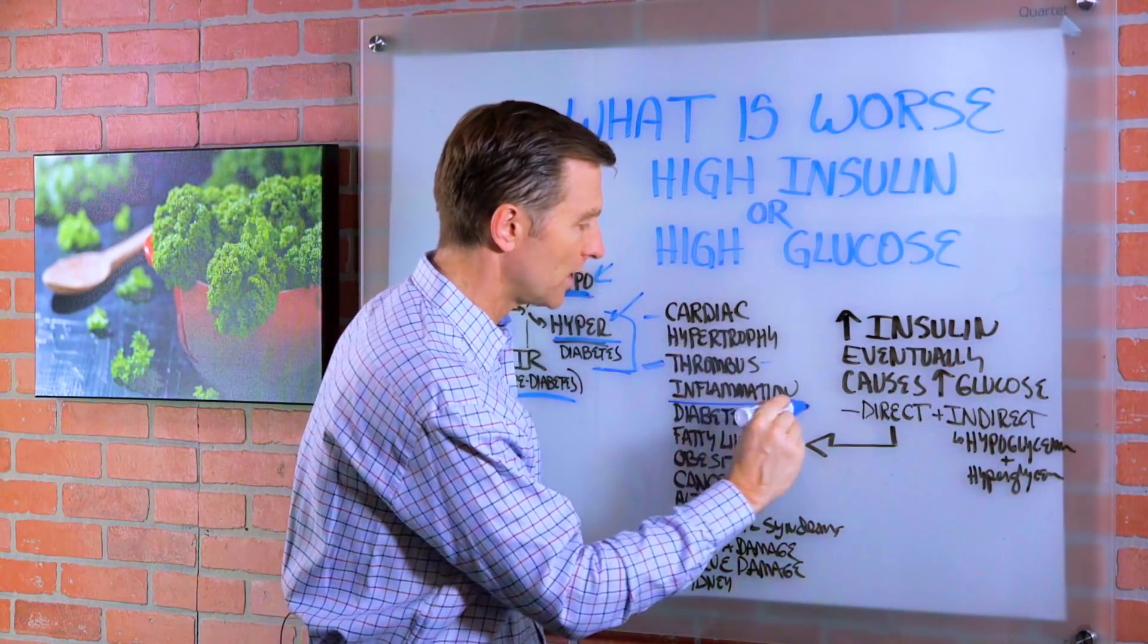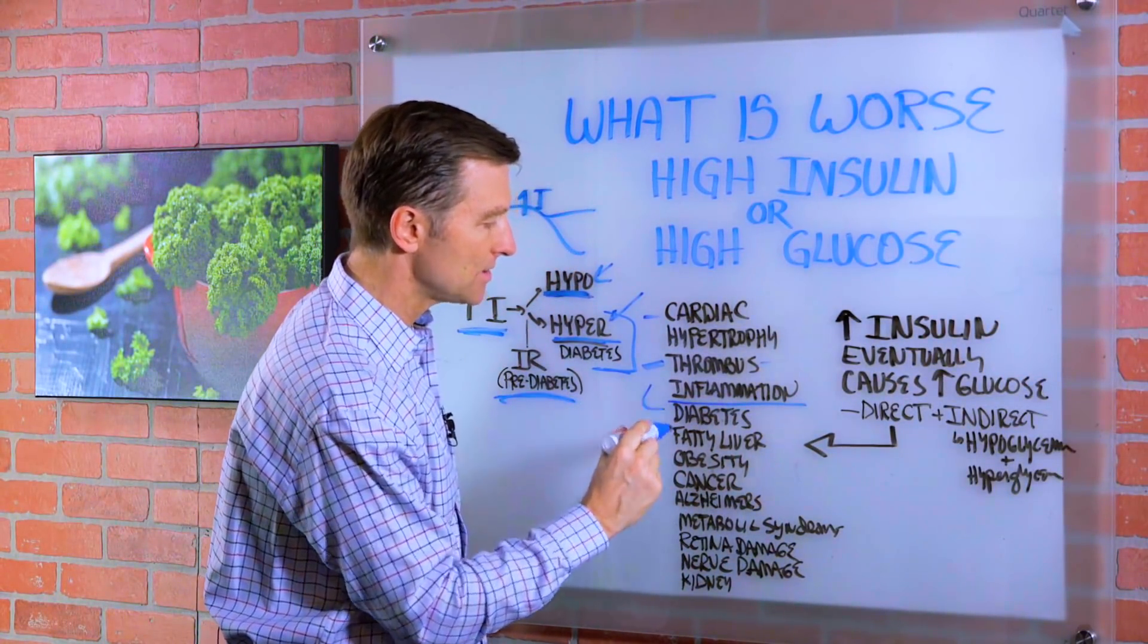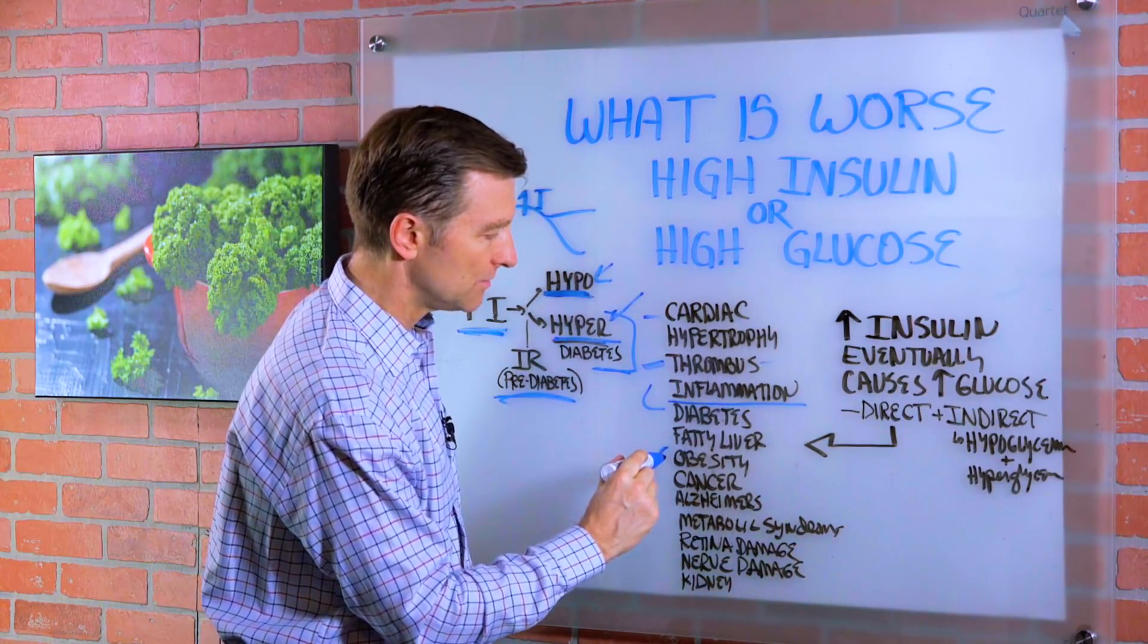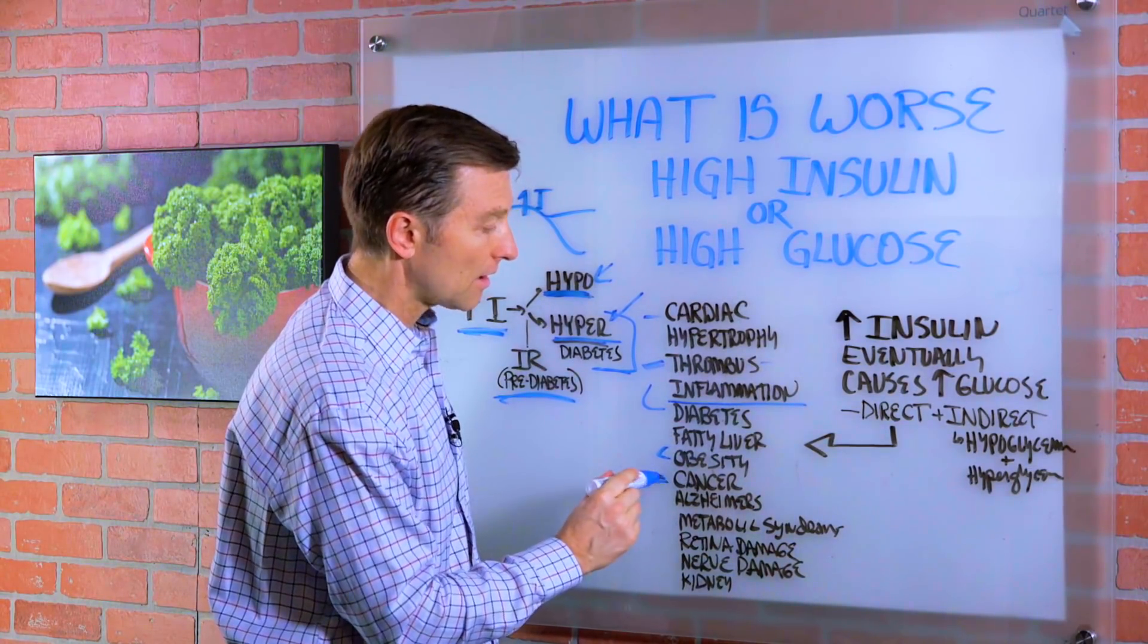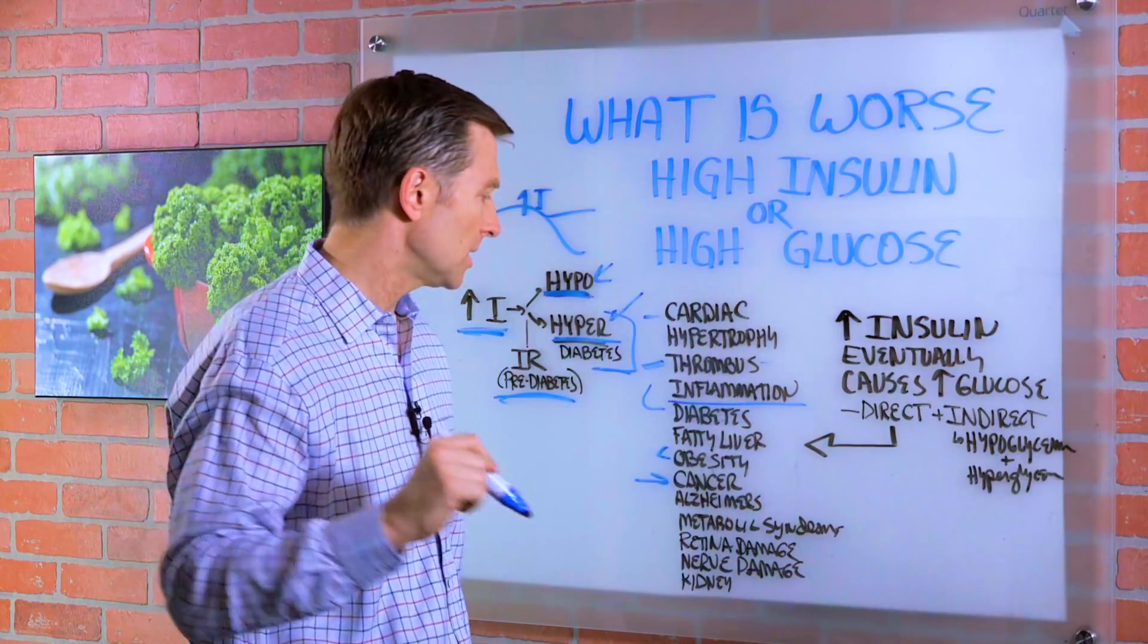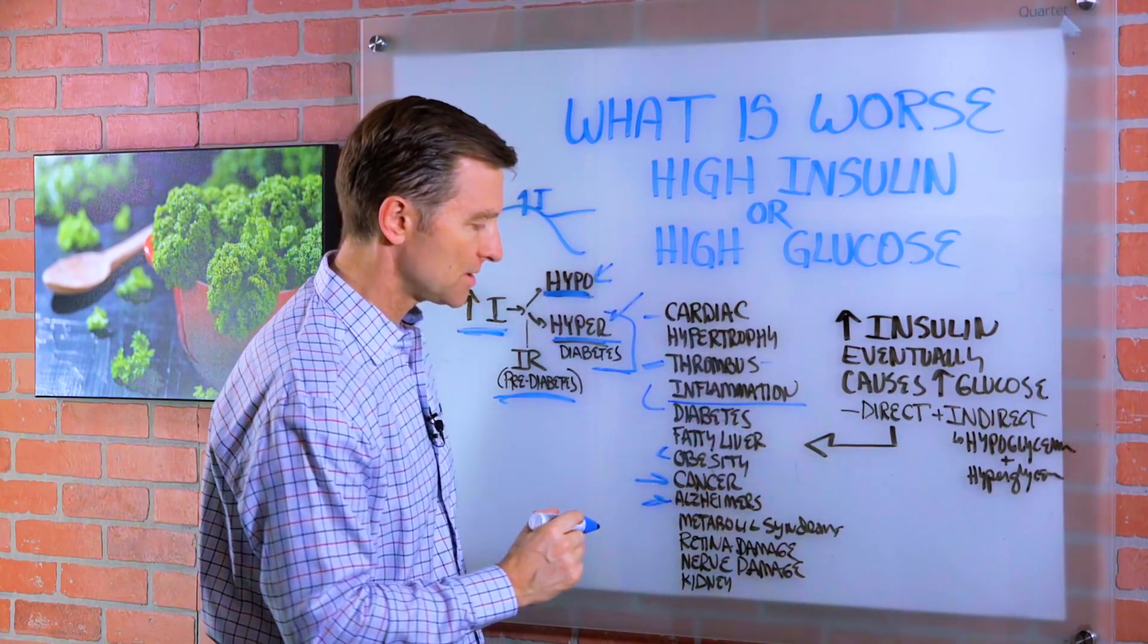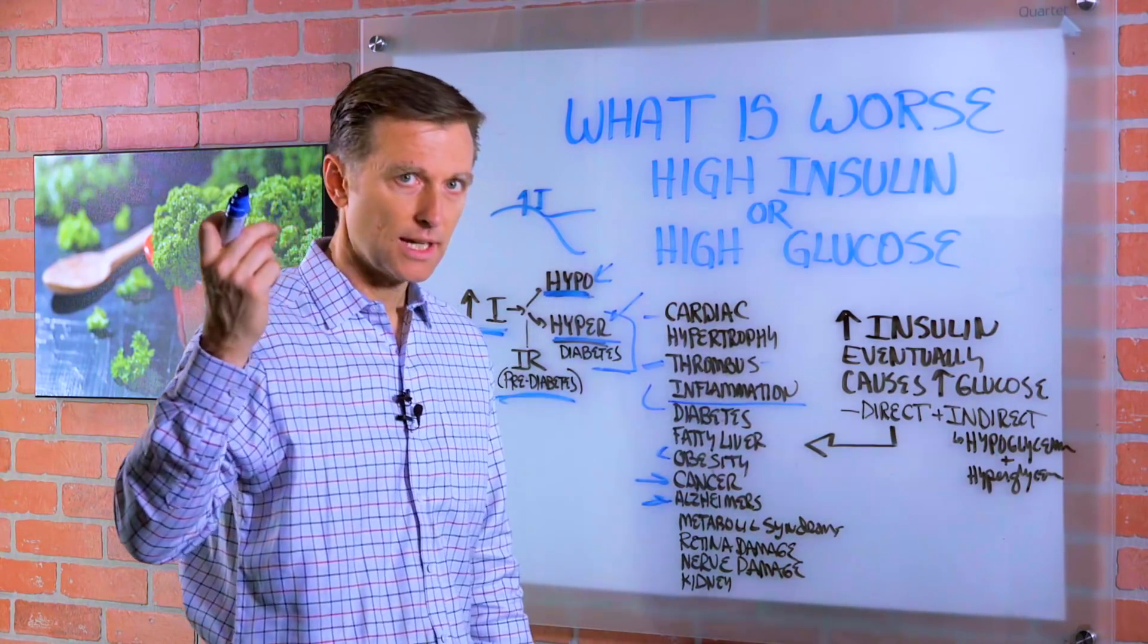So high insulin is behind most all inflammatory conditions. It turns into diabetes, causes fatty liver, makes you fat, and obesity causes cancer. I'm going to put some links down below. Alzheimer's, because it affects the dimension and plaquing of the brain, amyloid plaquing.